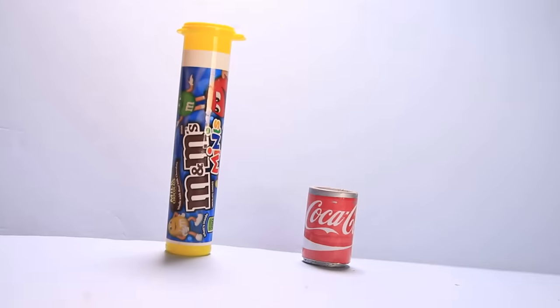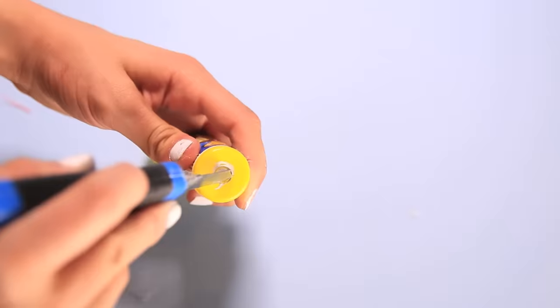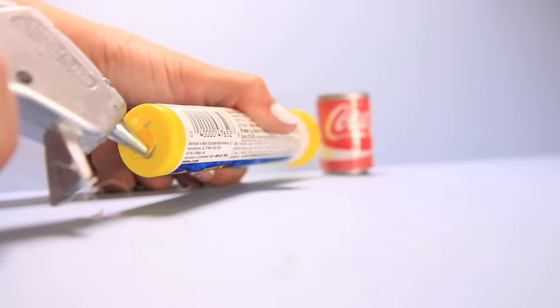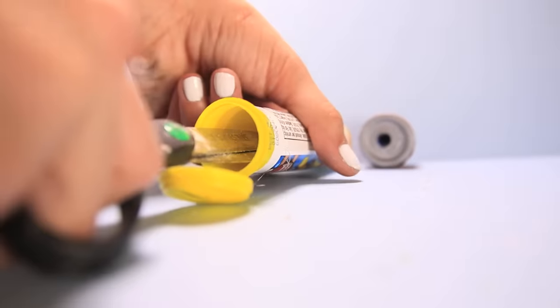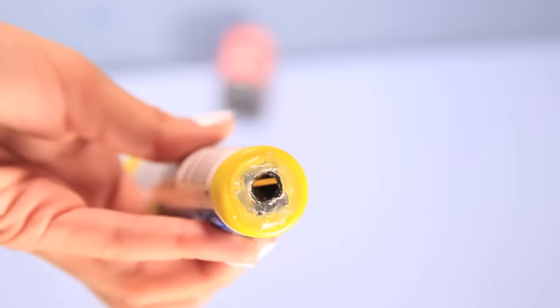And to show that you can literally make anything into a sharpener, I cut a hole out of the bottom of this M&M container and glued the sharpener in it. And I used a long pair of scissors as tweezers and voila! Sharpener!